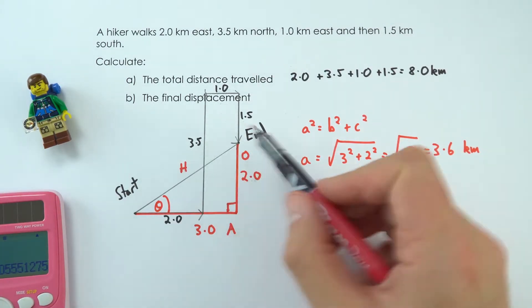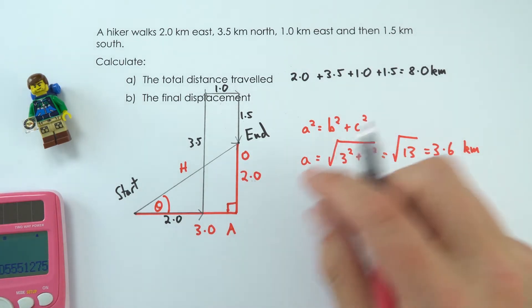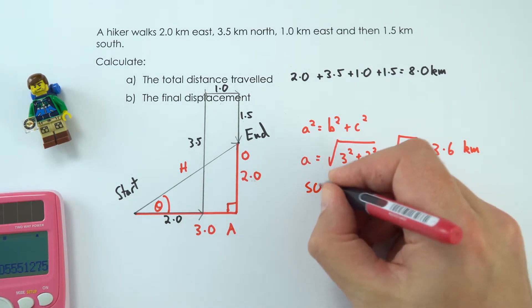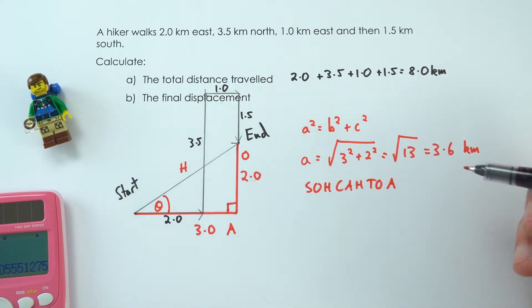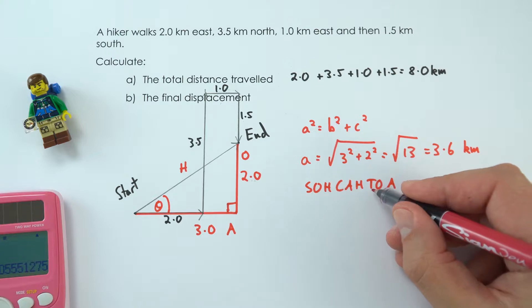We know all of these sides, but I'm going to look at the opposite and the adjacent side, and I'm going to try and remember SOHCAHTOA. I'm going to use the opposite and the adjacent side, and that means I'm going to use tan.